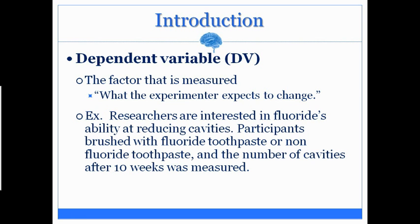Here's an example. Researchers are interested in fluoride's ability at reducing cavities. Participants brushed with fluoride toothpaste or non-fluoride toothpaste, and the number of cavities after 10 weeks was measured. We've already gone over the independent variable and the levels. So what is the dependent variable? The dependent variable is the object that is measured. What is measured here? It's the number of cavities after 10 weeks — so the number of cavities is the dependent variable.